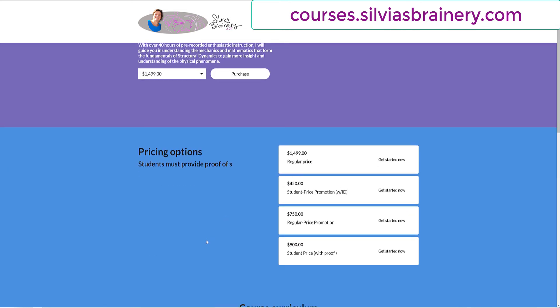You can either purchase through a regular price or a student price. For the student price, you need to have proof of being a student.